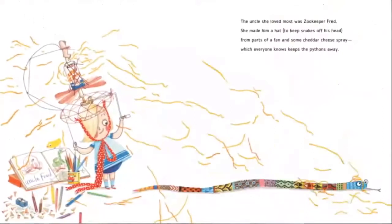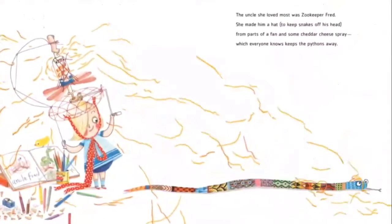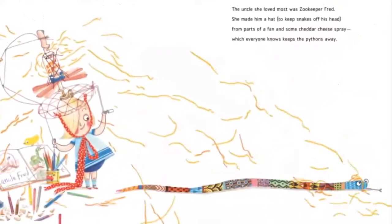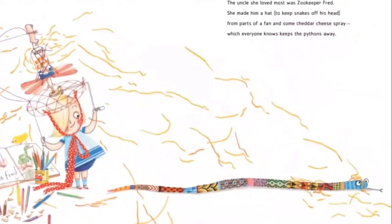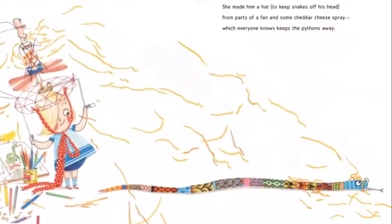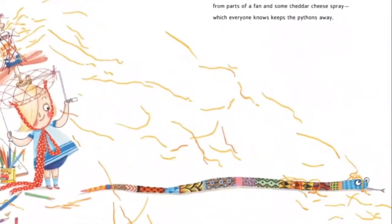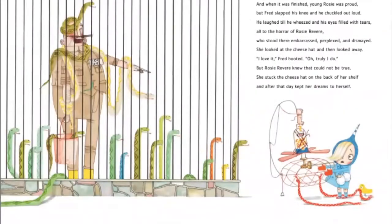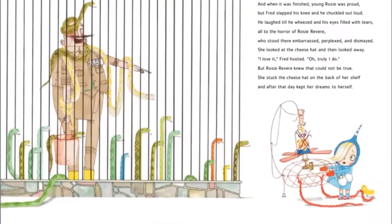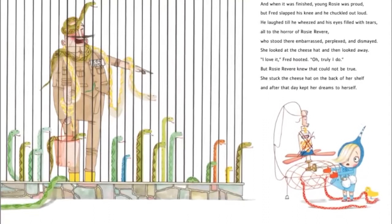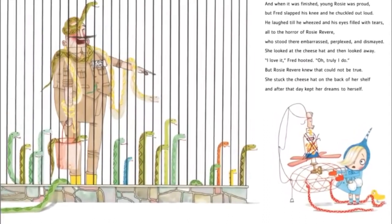The uncle she loved most was zookeeper Fred. She made him a hat to keep snakes off his head from parts of a fan and some cheddar cheese spray, which everyone knows keeps the pythons away. And when it was finished, young Rosie was proud. But Fred slapped his knee and he chuckled out loud.